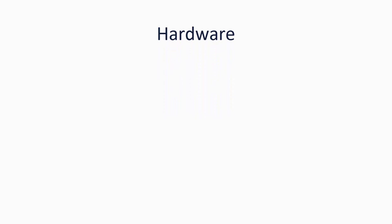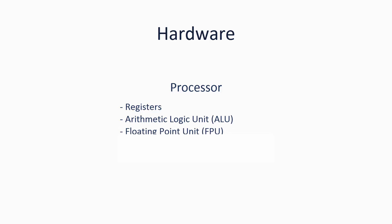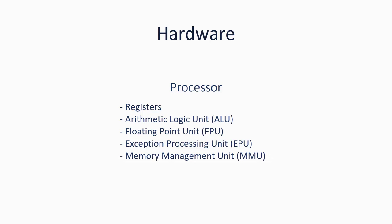The hardware consists of the processor, memory, and some other stuff. A processor has to perform the main operations very quickly, so all hardware essential to those operations is contained in the processor. This includes registers for temporary storage and processor configuration, the arithmetic logic unit for arithmetic and logical operations such as addition or exclusive OR, the floating point unit for floating point calculations such as multiplication of floating point numbers, and the exception processing unit for handling control flow of interrupts, and the memory management unit for managing access to the address bus.